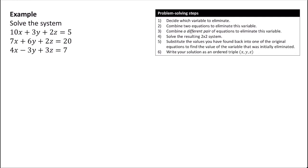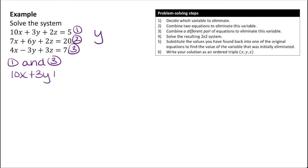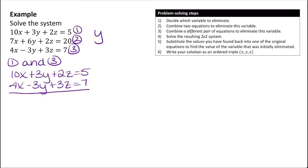Let's try another example. We'll decide which variable to eliminate. Based on how this system looks, I'm going to eliminate y because I see a 3y and a negative 3y — equal and opposite terms. I'll number my equations 1, 2, and 3. Combining equations 1 and 3: 10x plus 3y plus 2z equals 5, and 4x minus 3y plus 3z equals 7. Adding these gives 14x plus 5z equals 12 — equation 4.